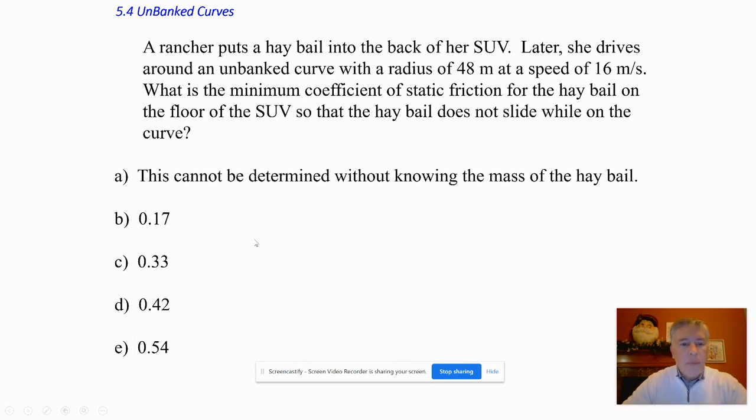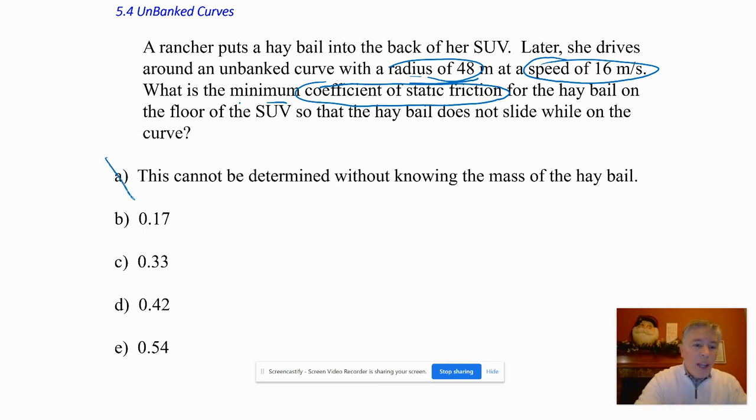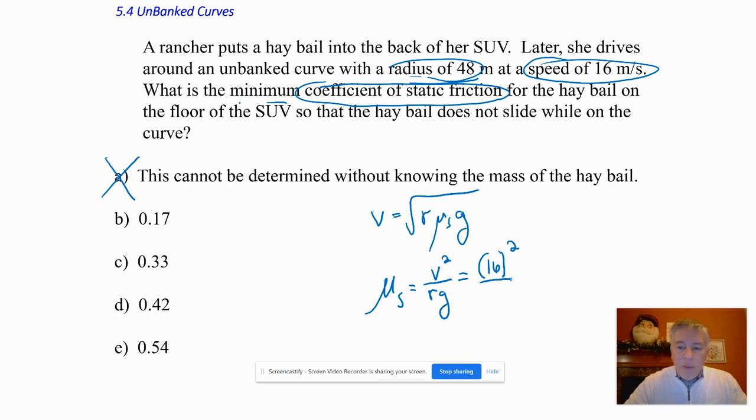Last but not least, let's try one more little problem. A rancher has a hay bale in the back of their SUV. They drive around an unbanked curve, and they want that hay bale not to slide around. What is the coefficient of static friction, the minimum, so that they go around a radius of 48 meters at a speed of 16 meters per second? Notice I put on here that it can't be determined without knowing the mass of the hay bale. That is irrelevant. We don't care what the mass of the hay bale is. I'm going to start with my rug equation, square root of r μ times g. But now I'm going to try to solve for that μ. So the coefficient of static friction should be v² over rg. So I've got 16² over 48 times 9.8.